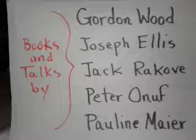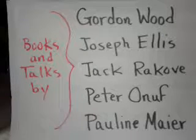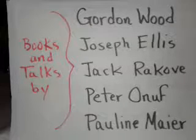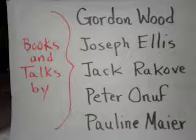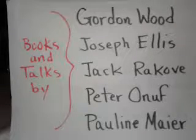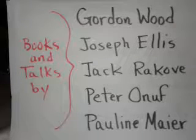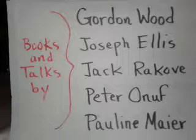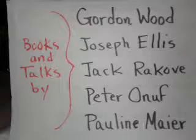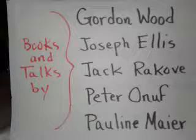'The institution of delegated power implies that there is a portion of virtue and honor among mankind, which may be a reasonable foundation of confidence. And experience justifies the theory.' So we are establishing this government thinking that there is a very small percentage of people that will be virtuous enough and will put the good of their country before their own self-interest. And these people have to be wise, well-informed, and have all the right qualifications — and then on top of that, put the interest of the country above their personal or partisan interest.